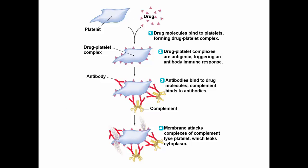Here you see platelets being coated with a drug, making an antigen. We make antibodies to this antigen. When the antibodies react, we fix complement, and that lyses the cell. This is what destroys the platelet numbers. This could be a white blood cell or a red blood cell just as easily.